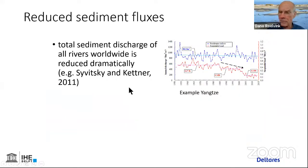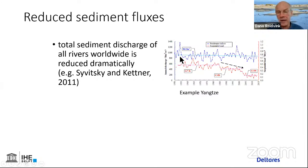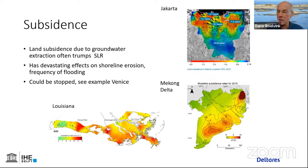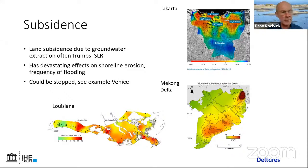Also, sediment fluxes from rivers to the sea are reducing rapidly. For the Yangtze River, the water flow is more or less constant in time, but the sediment flow has been reduced to a fraction — really going down dramatically. Then we have mostly human-induced subsidence, mainly due to groundwater extraction but also due to building heavy structures on soft soil. This usually has a much higher rate than sea level rise, but it acts in the same way, with devastating effects on shoreline erosion and flooding frequency.